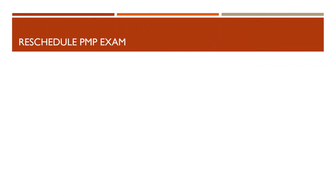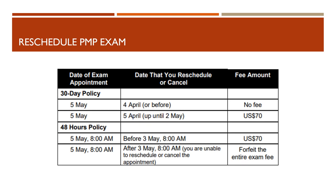Now let's talk about the two policies that apply when you're looking to reschedule your PMP exam. Number one is the 30-day policy. What this means is: if your exam is on the 5th of May, then by the 4th of April or before, no fee will be charged if you want to reschedule or cancel your exam. So if you reschedule or cancel on or before the 4th of April and your original exam date was the 5th of May, no fee is charged.